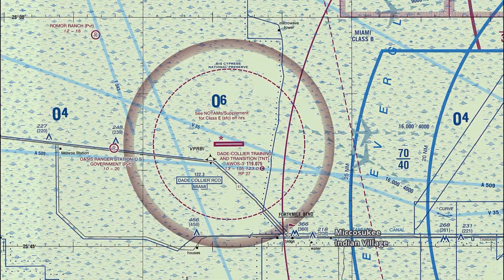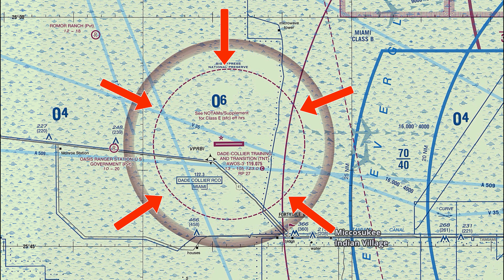The next class echo airspace we'll look at is the surface areas, depicted by dashed magenta lines on sectional charts. These surface areas provide controlled airspace down to the surface around airports that accommodate IFR operations but lack a control tower. They ensure safe transitions for IFR traffic during critical phases of flight, especially approaches, while also protecting instrument approaches in poor weather conditions. Constant communication with ATC is maintained with class echo surface areas, allowing IFR pilots to receive guidance and separation from other aircraft all the way to the surface.